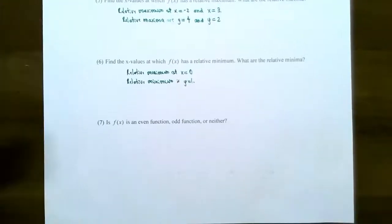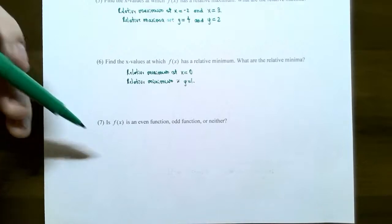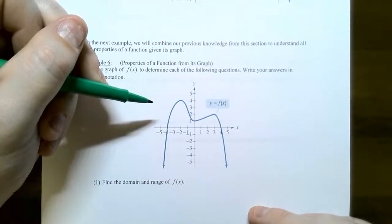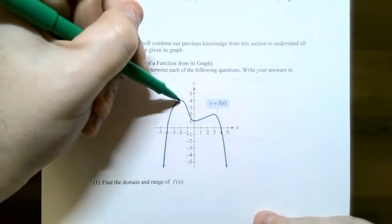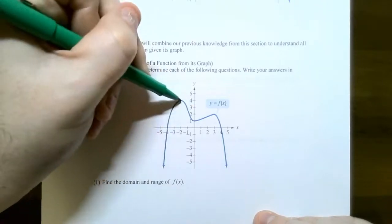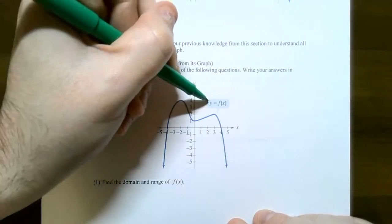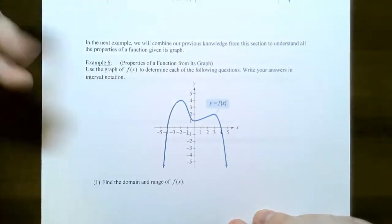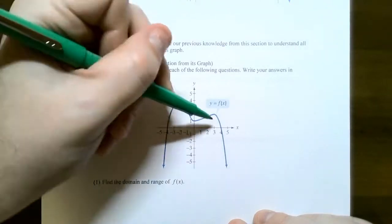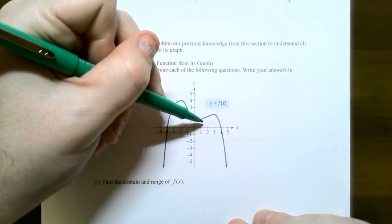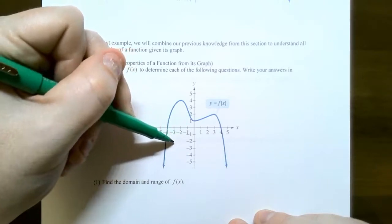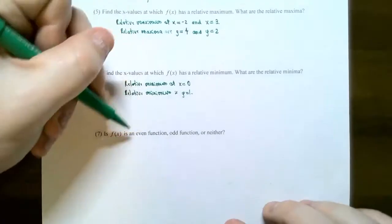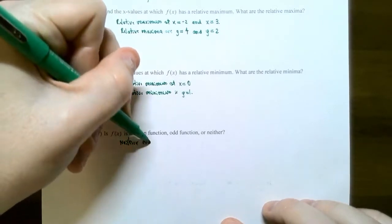Number seven: is this function even, odd, or possibly neither? That's based on the symmetry of the graph. Does the graph have y-axis symmetry? There was a relative maximum when x = −2 and y = 4, but looking across the y-axis, there is no point at (2, 4). So it's not y-axis symmetry — not even. The graph also does not appear to have origin symmetry. If I take a point and draw a line through the origin, I should get (−3, −2), but there's no point there. So it does not have origin symmetry, meaning the function is not odd either.